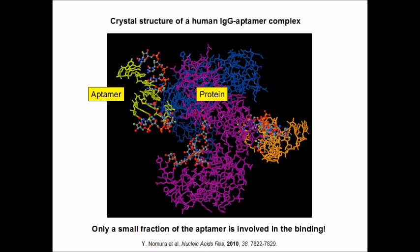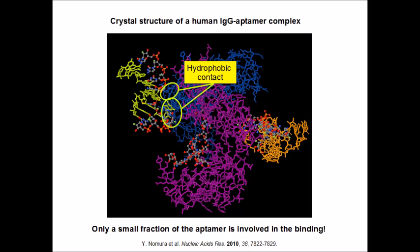Nucleotide bases are also involved in the interactions of nucleic acids with proteins. As we can see here in the crystal structure of a human IgG aptamer complex, only a small part of the nucleic acid is interacting with the protein. In fact, certain hydrophobic base residues of the nucleic acid are interacting with hydrophobic parts on the protein surface.